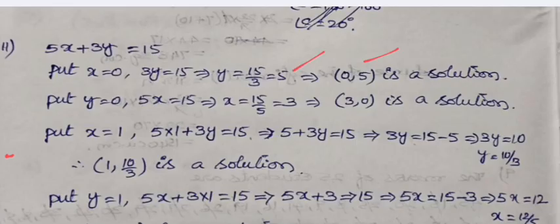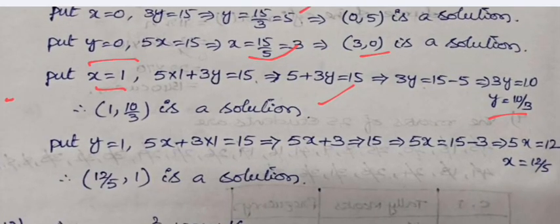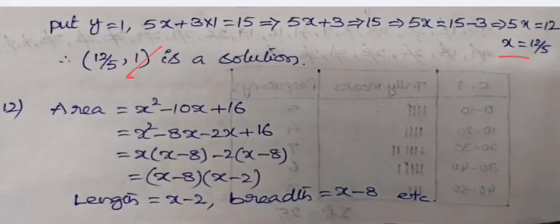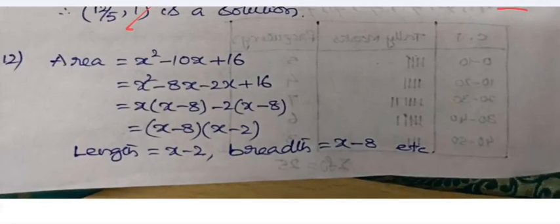x = 0, if we substitute we get y = 5, so (0, 5) is a solution. When y = 0, we take x = 3, it is again a solution (3, 0). If we take x = 1, we get y = 10/3, so (1, 10/3) is also a solution. Putting y = 1, the value of x obtained is 12/5, so (12/5, 1) is also a solution. In this way, four solutions are calculated.